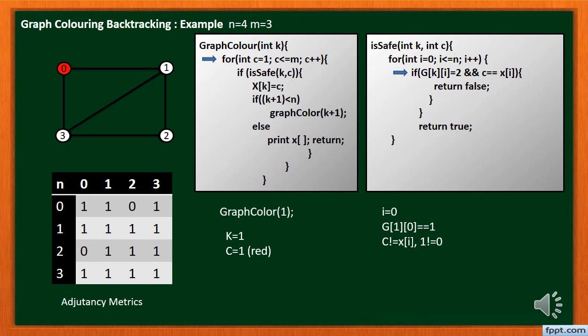This time this condition is satisfied, then C is incremented by 1, that is green color. Then check again, this time the condition is not satisfied.